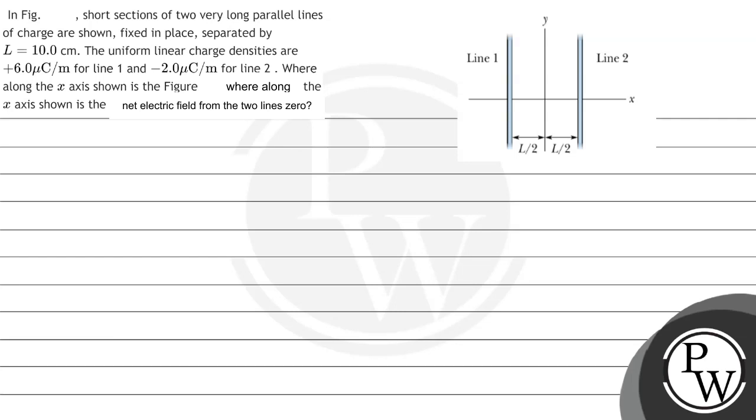Let us read the question. The question says in figure, short sections of two very long parallel lines of charge are shown fixed in place, separated by L equals 10 centimeters. The uniform linear charge densities are 6 microcoulombs per meter for line 1 and minus 2 microcoulombs per meter for line 2, where along the x-axis is shown in the figure.